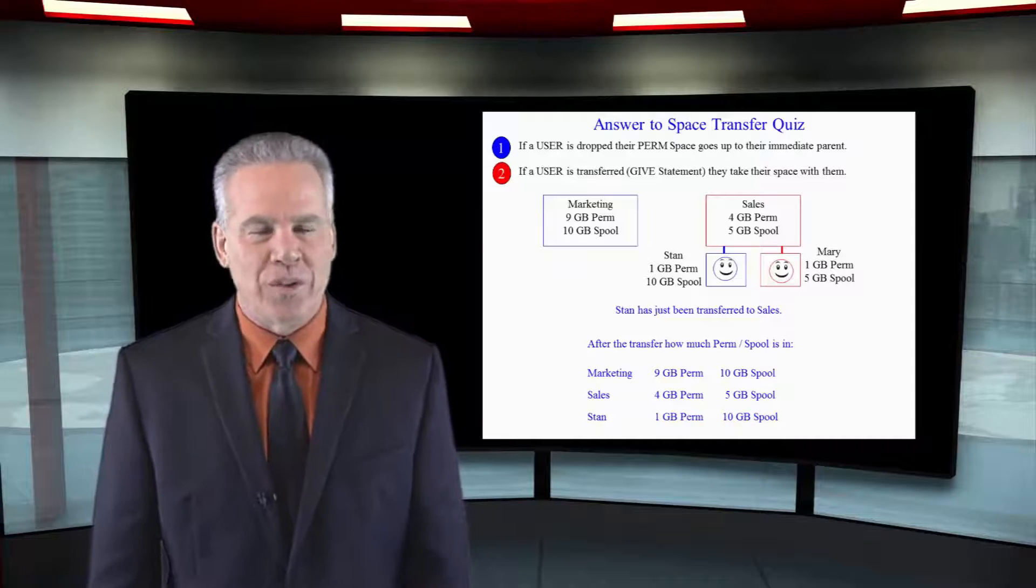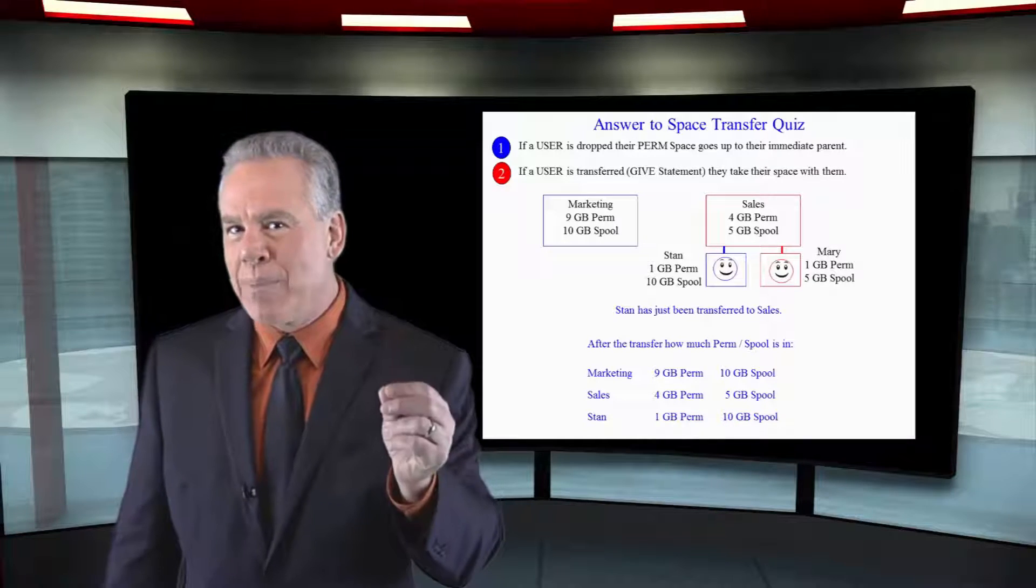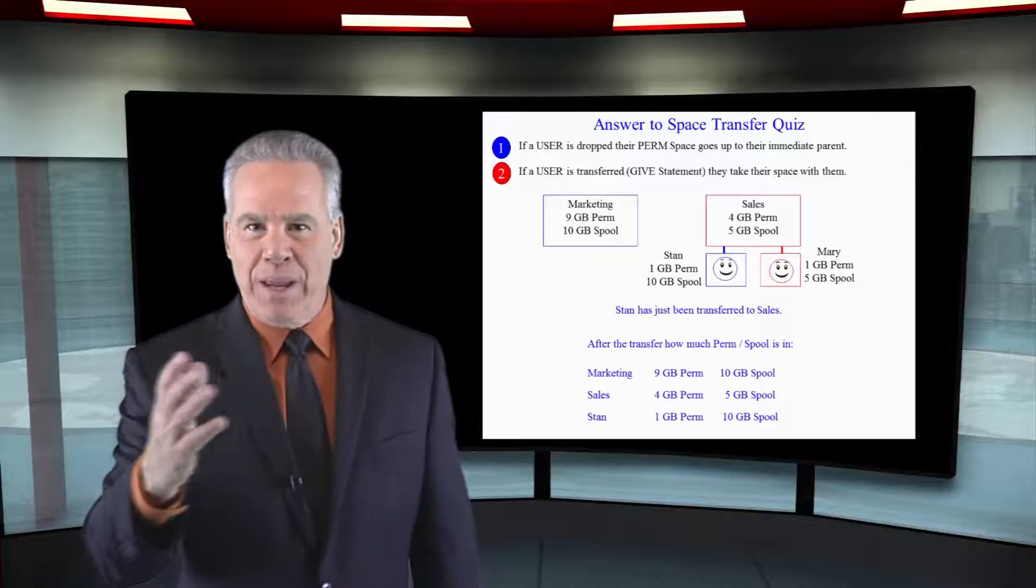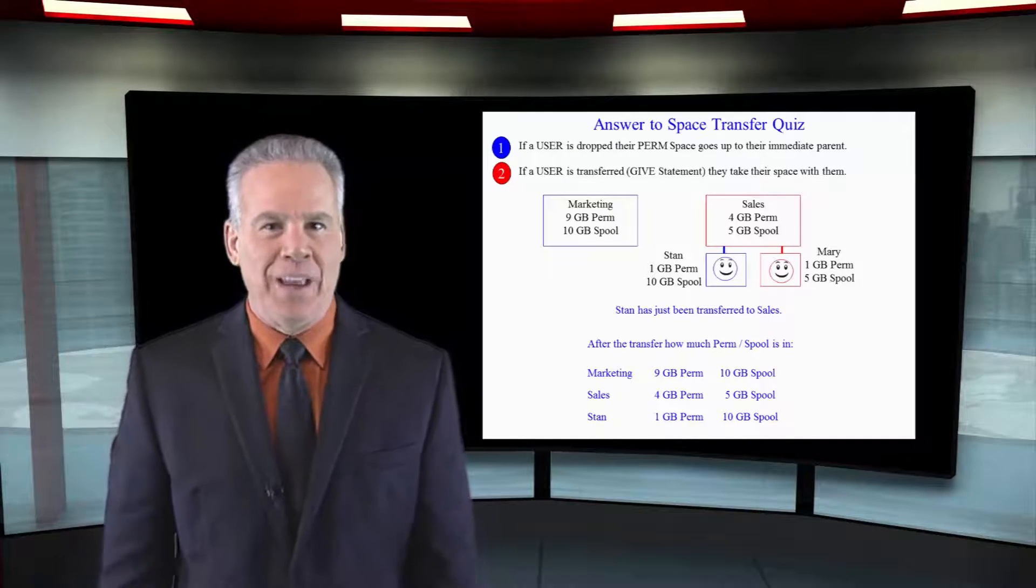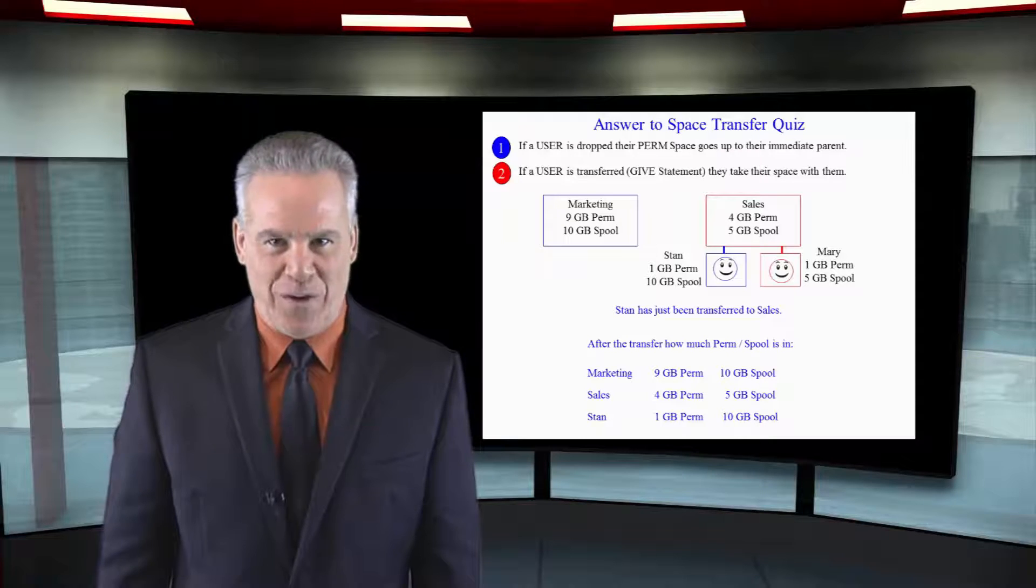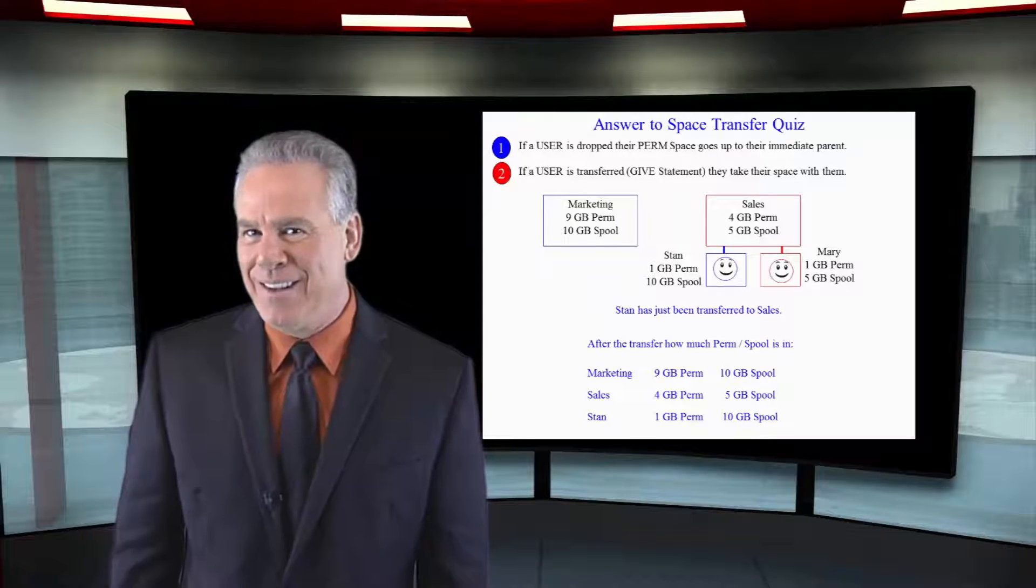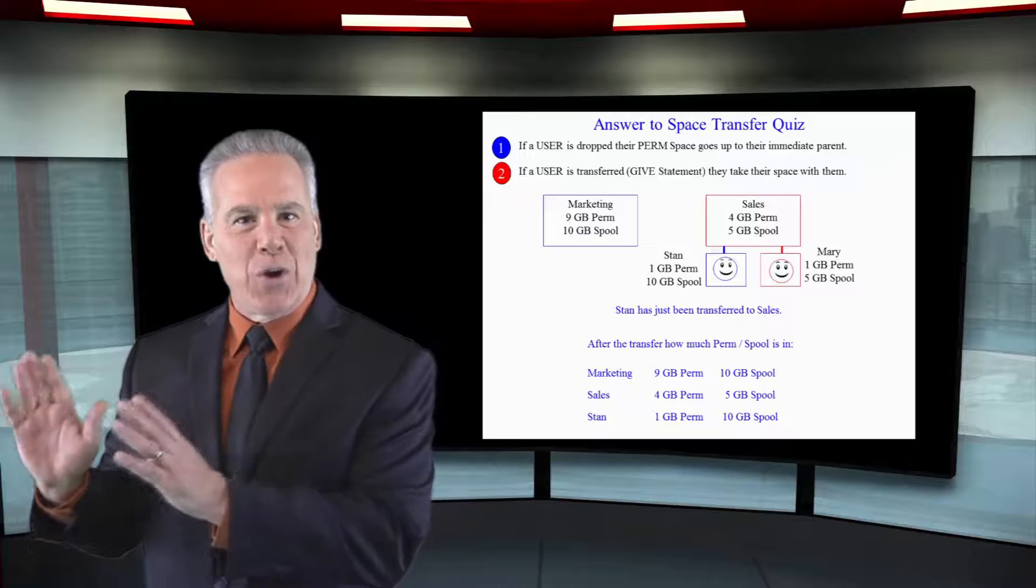Remember our rules. If a user is dropped, their space, perm space, goes to their immediate parent. If a user is transferred with the give statement, all their space goes with them.